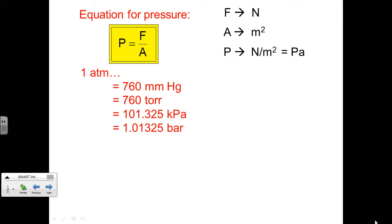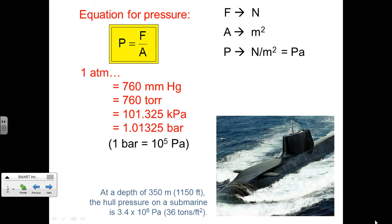All of those units convert to equal the most prominent conversion, which is 1 atm — the staple for standard pressure conditions. For reference, 1 bar equals 10⁵ pascals. To give you context on pressure: at a depth of 350 meters, the hull pressure on a submarine is 3.4 × 10⁶ pascals, which is roughly 36 tons per square foot — a large amount of pressure.